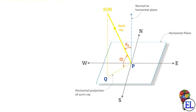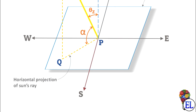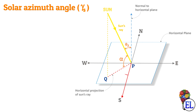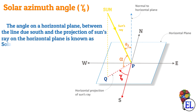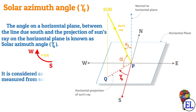Now moving to solar azimuth angle. Highlighting the south direction and the projection of the sun's ray on the horizontal plane — both shown in red. The angle measured between these two lines on the horizontal plane is the solar azimuth angle. We define it as the angle on the horizontal plane between the line due south and the projection of the sun's ray on the horizontal plane, denoted by gamma s. It is considered positive when measured from south towards the west.